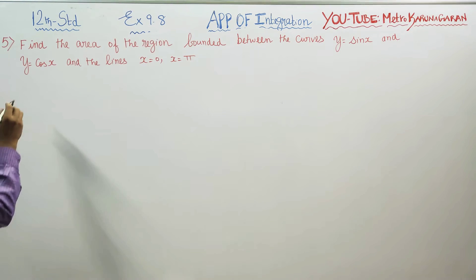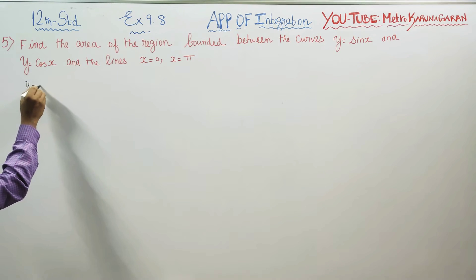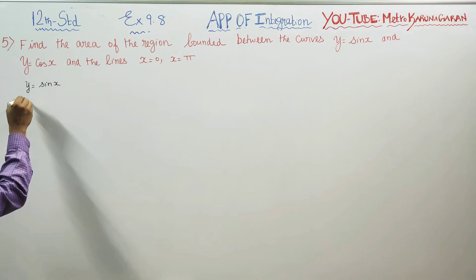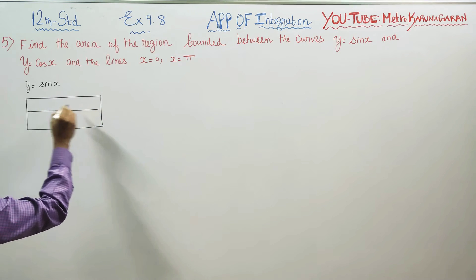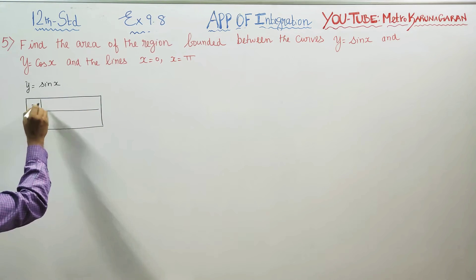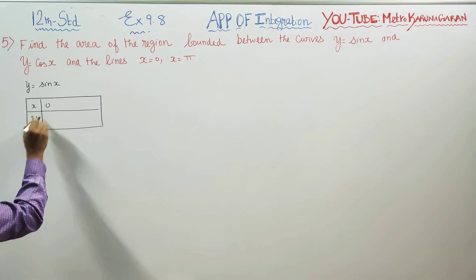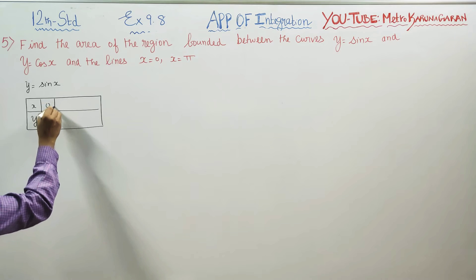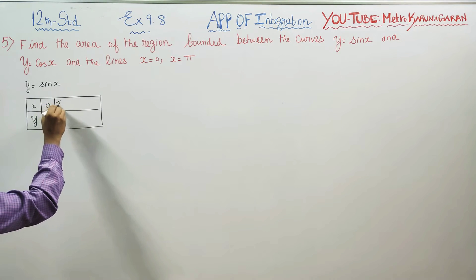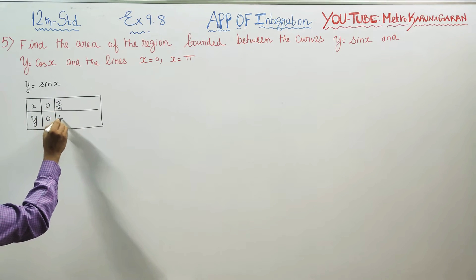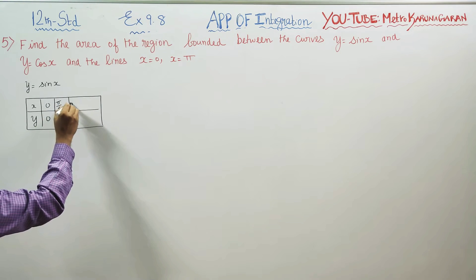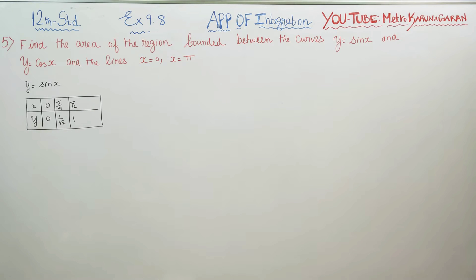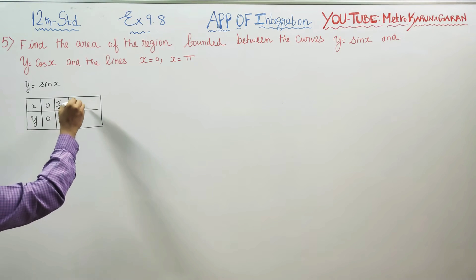First of all, I will start with y = sin x. Sin x is a standard curve, but for your information I am giving some values. At x = 0, sin 0 = 0. At x = 45°, sin 45 = 1/√2. At x = 90°, sin 90 = 1.